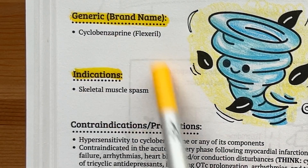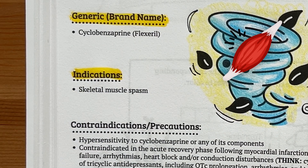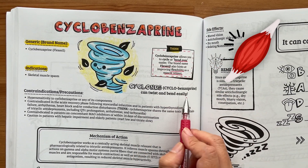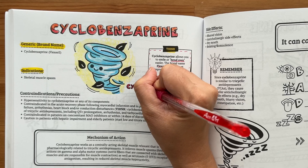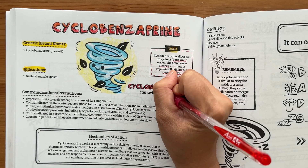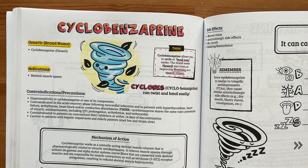Cyclobenzaprine is indicated for skeletal muscle pain. It's often combined with rest, physical therapy, and other measures to help relax muscles and relieve pain caused by strains and other muscle injuries.